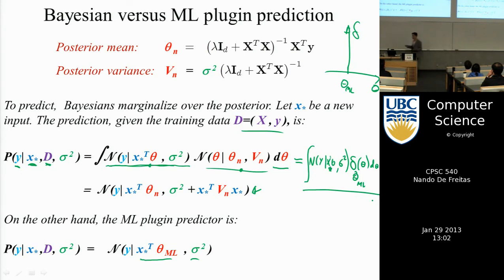The delta function is also called the Dirac function, or the impulse function, as the engineers call it. And one of the properties of the Dirac function is if you do an integration with respect to the Dirac function, you essentially just pick the theta ML. In other words, if I were to multiply a Gaussian times a spike, then it would be zero everywhere except where the spike is. And at that point, it would be the value of the Gaussian. And that's why that integral simplifies to this expression here at the bottom. Because frequentists assume there's only one true theta. There's only one theta.